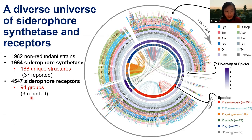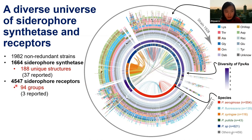We also annotated their receptors and found that although all of them are FpvA-type receptors that take up pyoverdine, their sequences have diverged. Clustering by sequence similarity reveals about 90 groups, and only three of them had been previously reported.